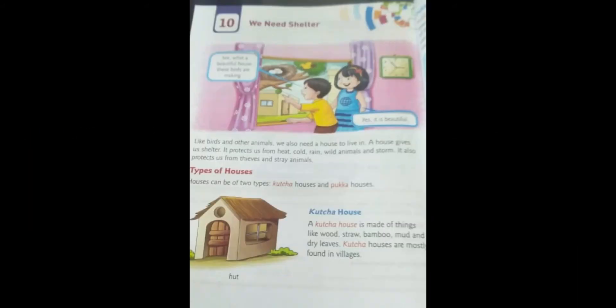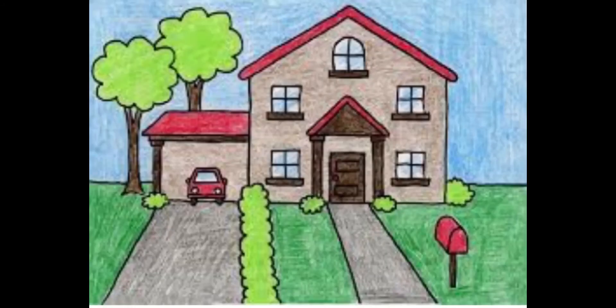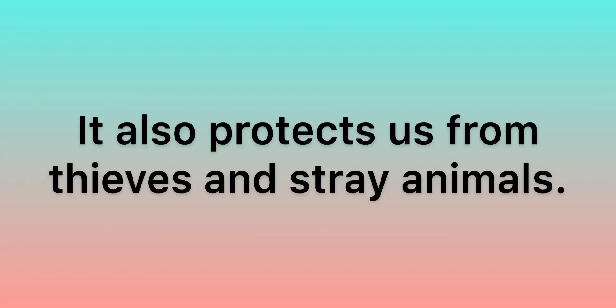Children, like birds and animals, we also need a house to live in. Houses give us shelter. It protects us from heat, cold, rain, wild animals and storm. It also protects us from thieves and stray animals.